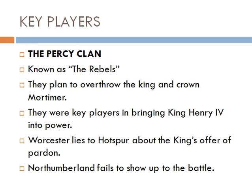The Percy clan are known as the rebels. They plan to overthrow the king and crown Mortimer, and they were key players in bringing King Henry IV into power in the first place. So they've got a reputation for causing disorder and anarchy — they've done this before. Worcester lies to Hotspur about the king's offer of a pardon, so there's disorder even within the ranks of the rebels. Northumberland also fails to show up to the battle, suggesting a lot of disorder even among the rebels themselves.